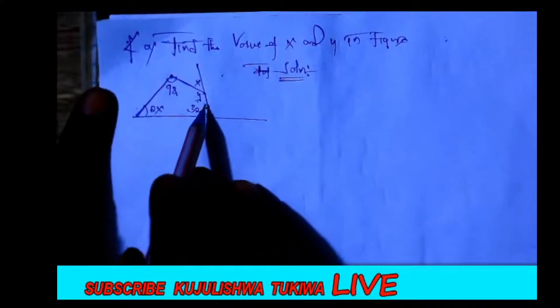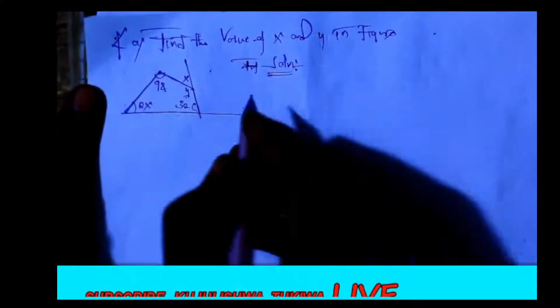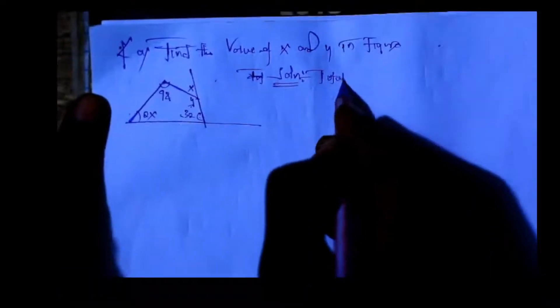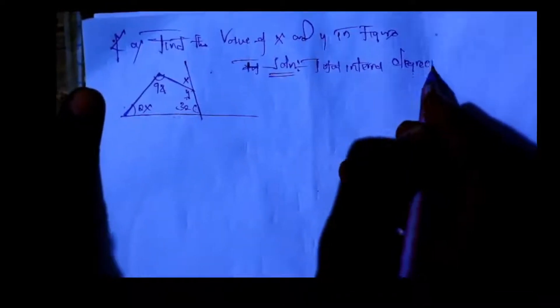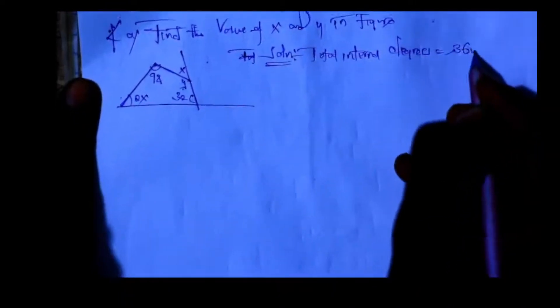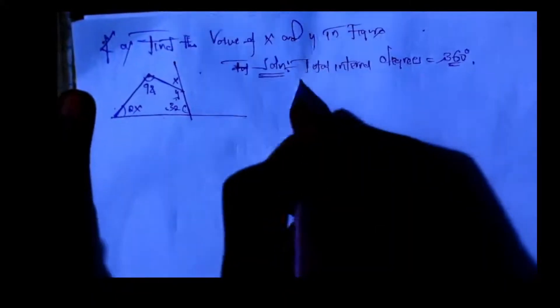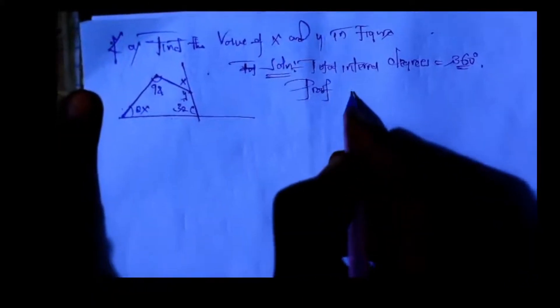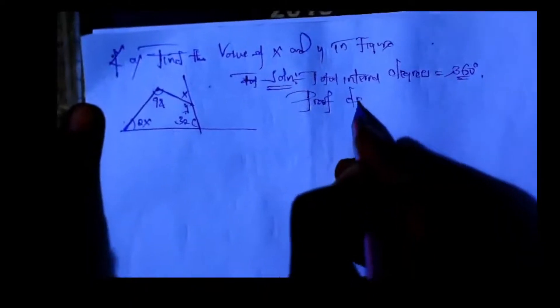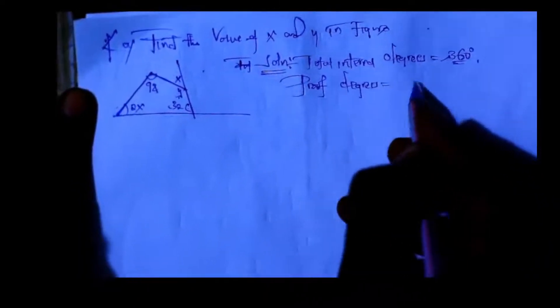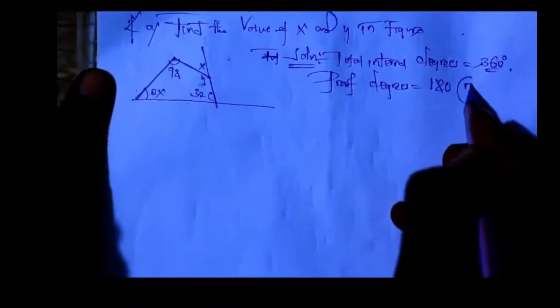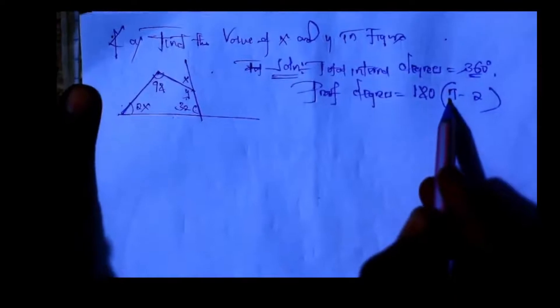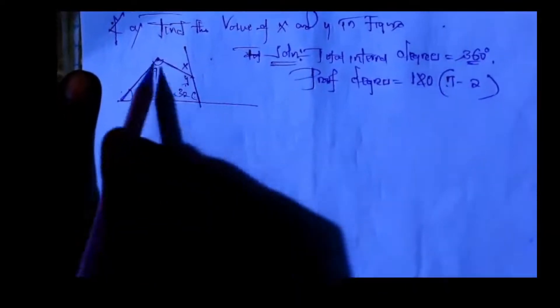Since this is a quadrilateral, that means the total internal degrees — the total internal degrees — is almost 360 degrees. And to prove for this, you need to use the formula: degrees equals to 180 times (n minus 2), whereby n is just the total number of angles inside.